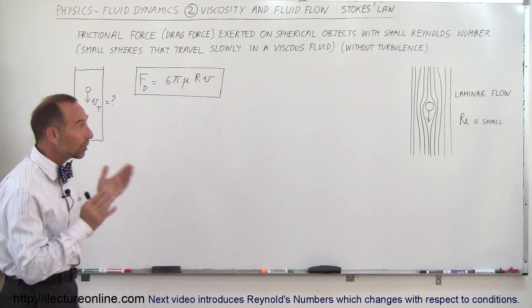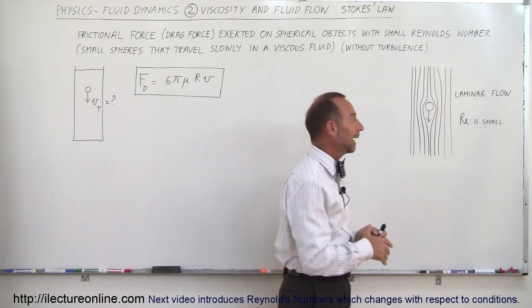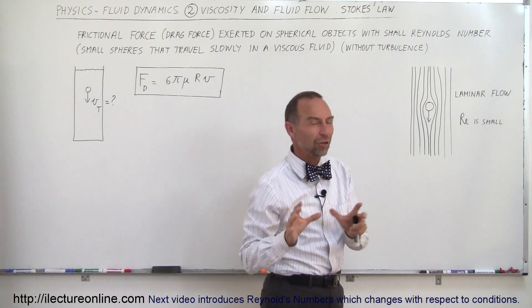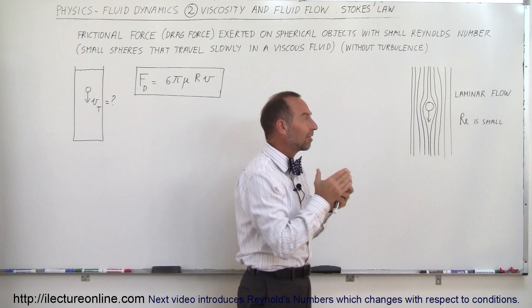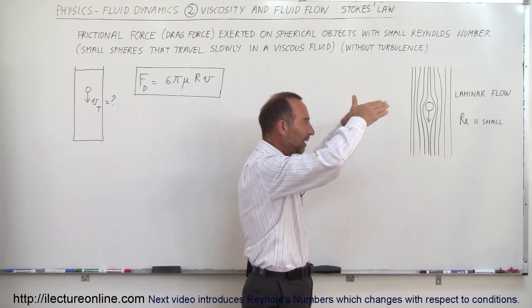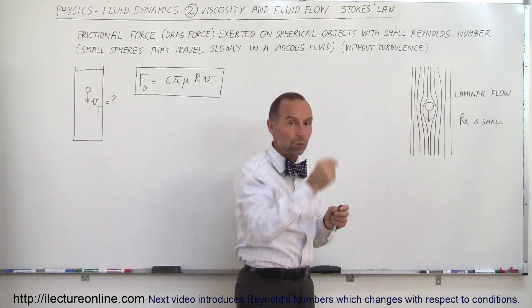The reason why we say small velocities is because we want the flow to be laminar, not turbulent, and for that we need the Reynolds number to be small. We'll talk about Reynolds number in a different video, but what it comes down to is if the Reynolds number is small, that simply means that the object moves slowly and the fluid can move nicely in laminar flow around the object as the object is falling or moving through the fluid.